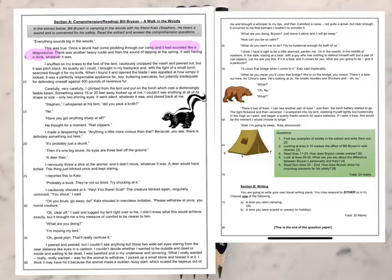'It was a perfectly respectable appliance for, say, buttering pancakes, but patently inadequate for defending oneself against 400 pounds of ravenous fur. Very carefully, I climbed from the tent and put on the torch, which cast a distressingly feeble beam. Something about 15 or 20 feet away looked up at me. I couldn't see anything at all of its shape or size — only two shining eyes. It went silent, whatever it was, and stared back at me. "Steven," I whispered at his tent. "Did you pack a knife?" "No."'